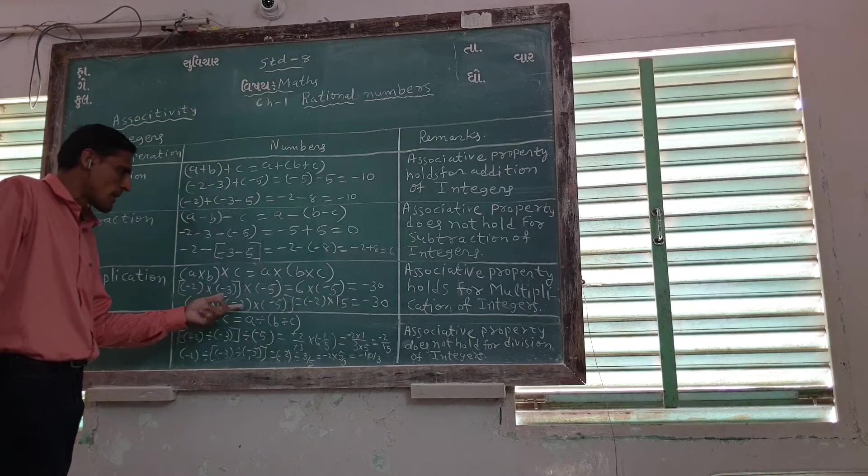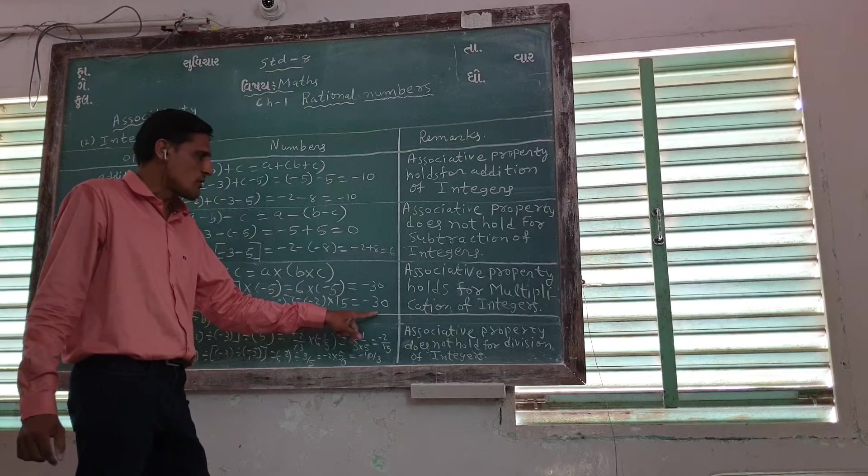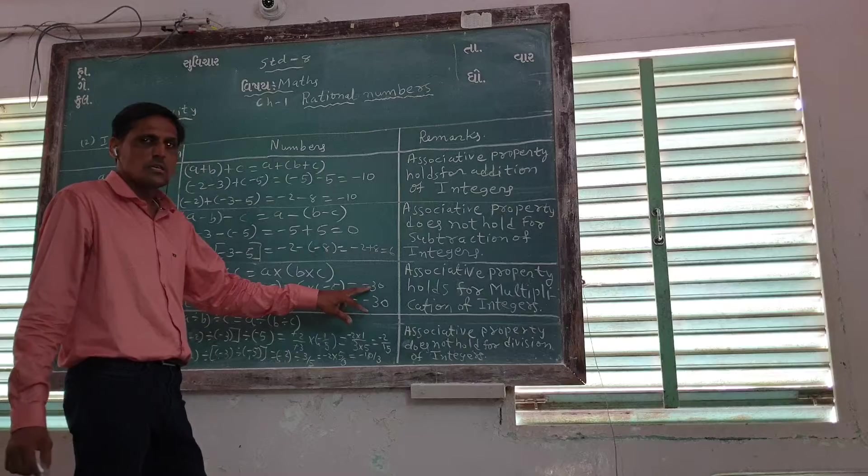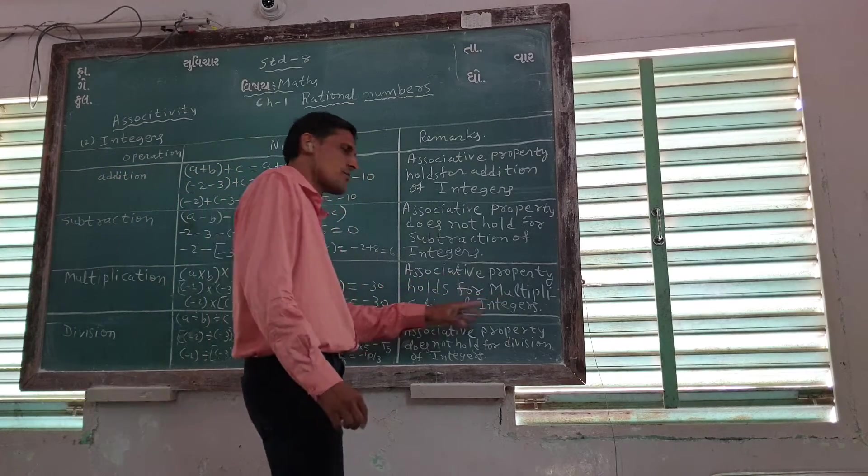Minus 2 into minus 3 into minus 5, so minus 2 into 15, so answer is over minus 30. Both answers are the same, so we can write associative property also, multiplication of integers.